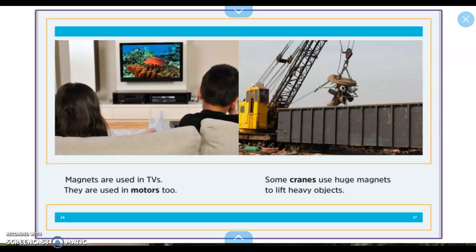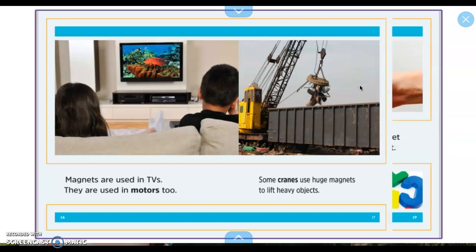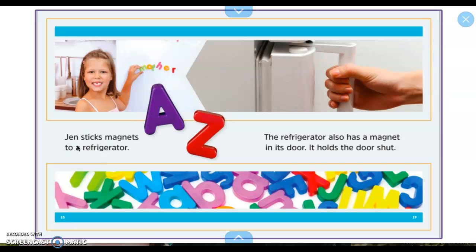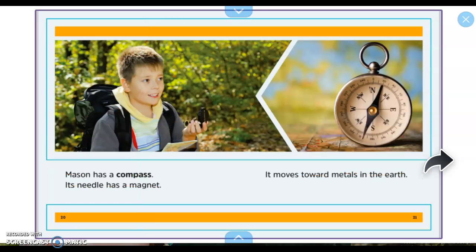Some cranes use huge magnets to lift heavy objects. So this crane, this is a gigantic magnet. Jen sticks magnets to a refrigerator. The refrigerator also has a magnet in its door. It holds the door shut. Did you know that that was what was keeping it closed? Mason has a compass. Its needle is a magnet. It moves toward metals in the earth.